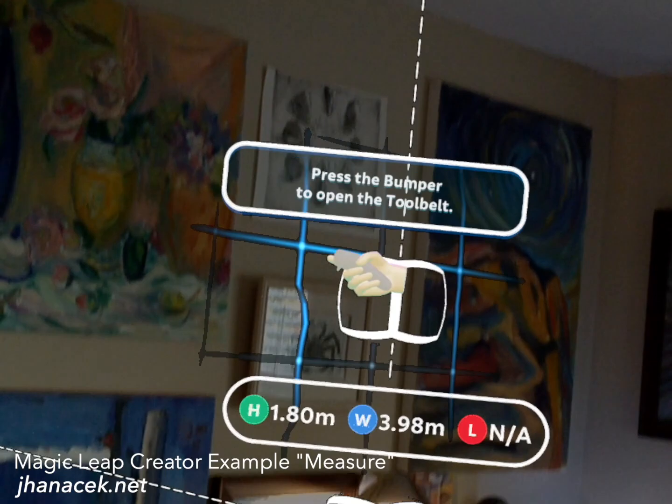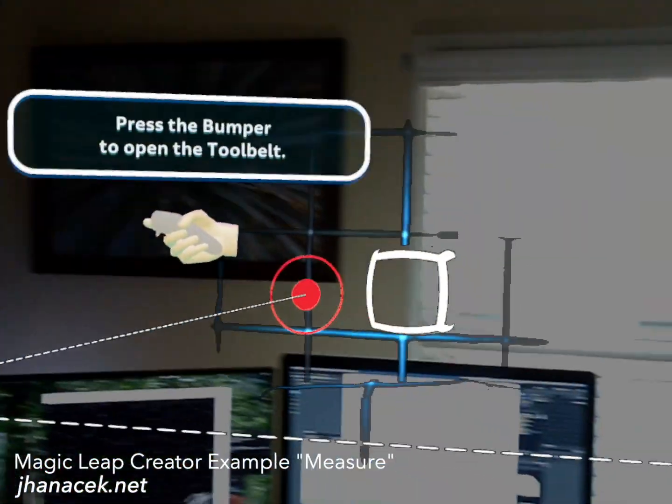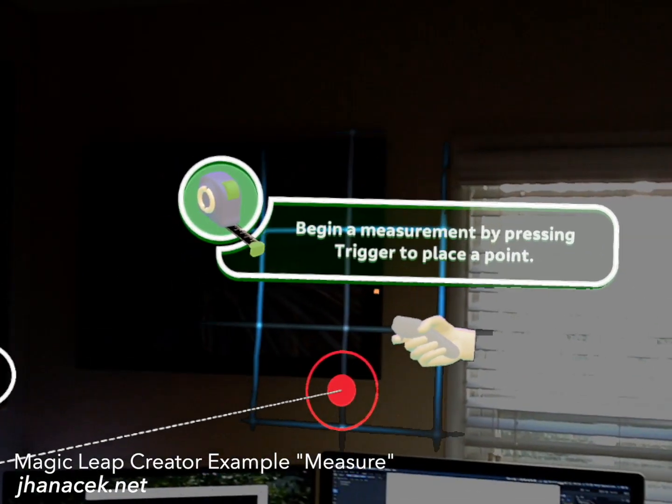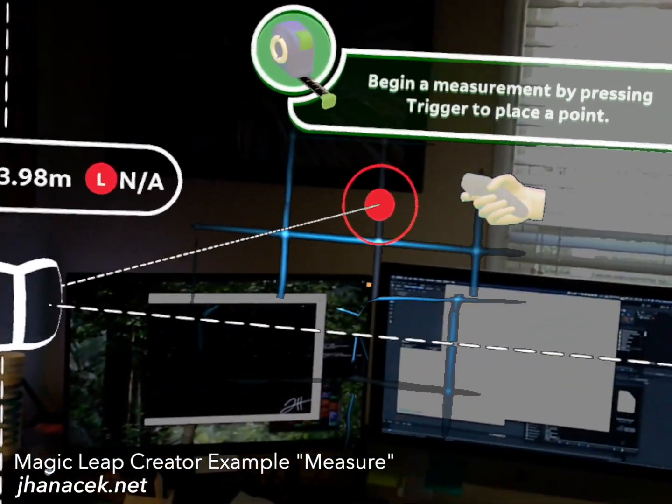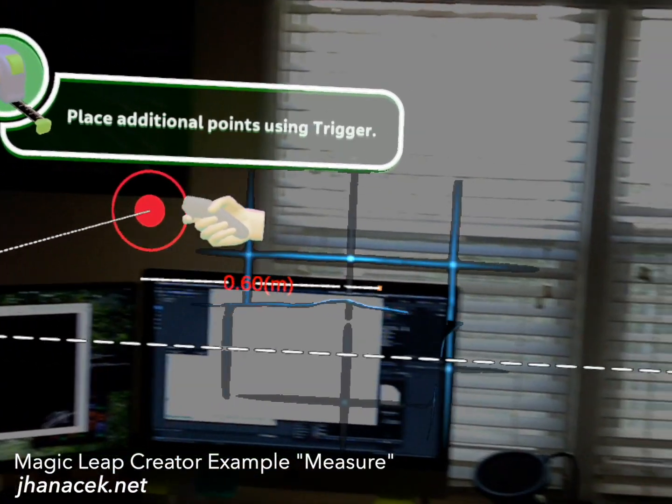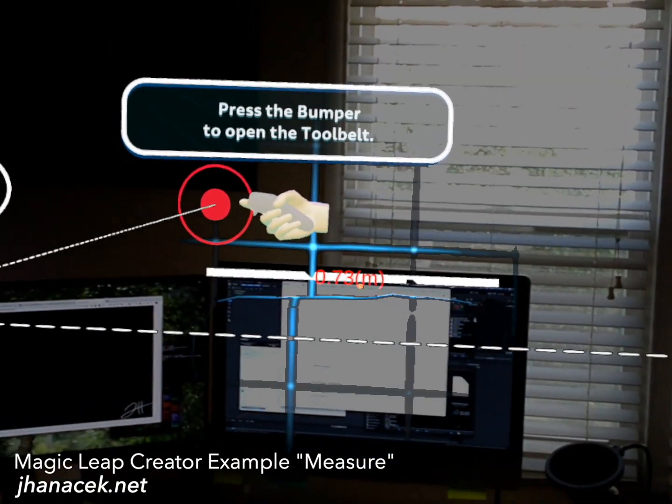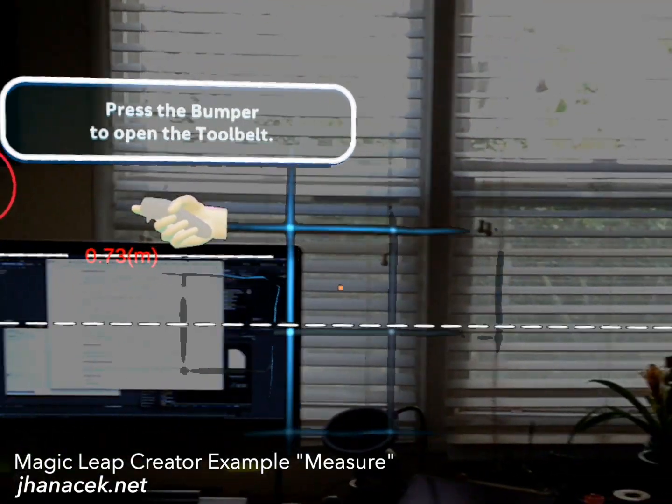What do we got? Measurements! Amazing. We got more. What's this? A tape measure. I can measure. Let's see how big this monitor is. Oh, I place points. This is 0.73 meters. I'm gonna have to change that scaling.